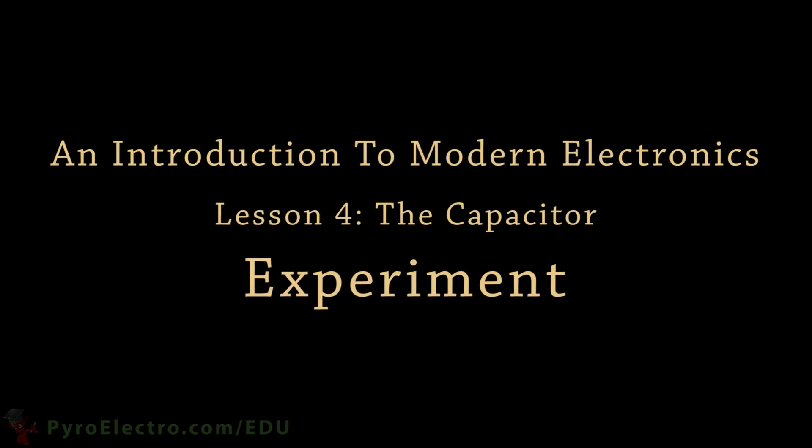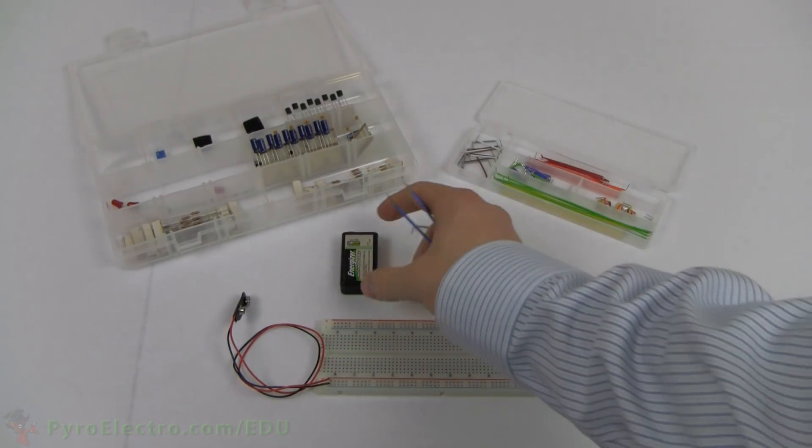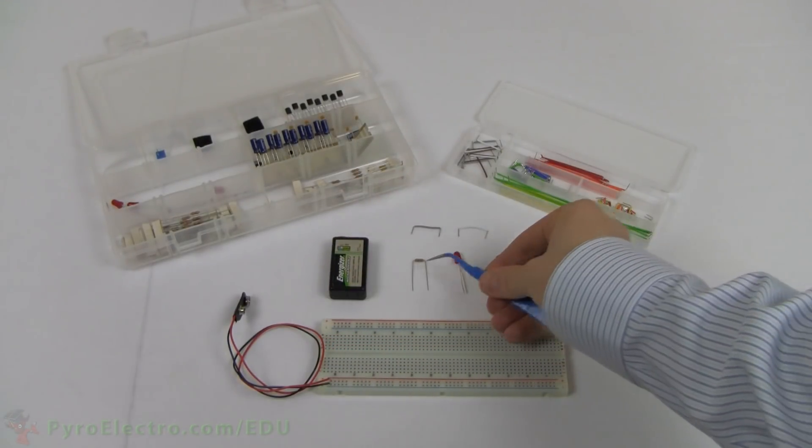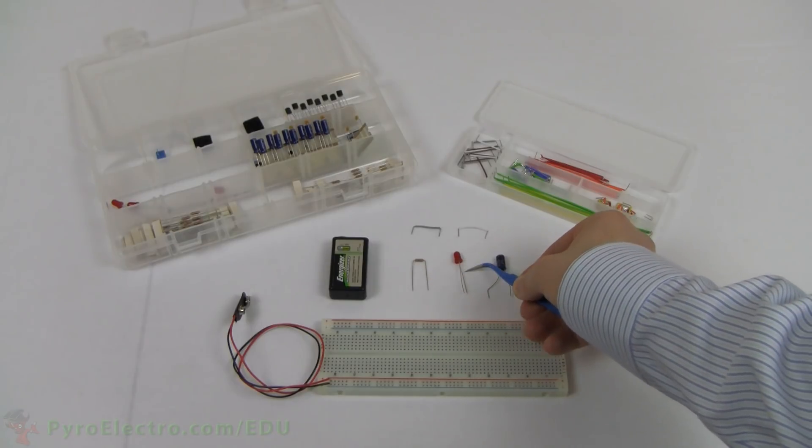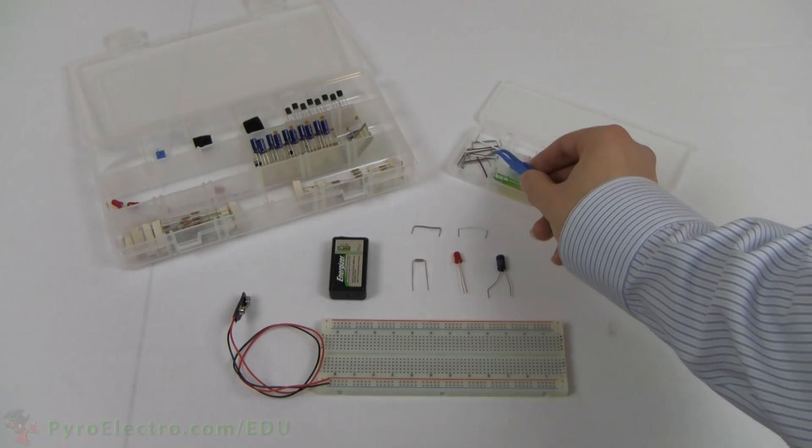Let's perform an experiment to better understand the capacitor's energy storing ways. From the parts kit, you will need a 9-volt connector, a 9-volt battery, 470-ohm resistor, red LED, a random capacitor (choose a big one), and some breadboard wires from the wire kit.